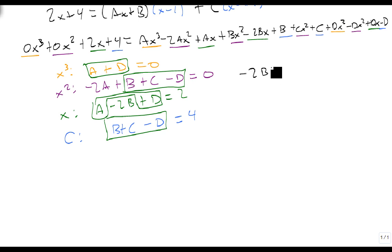So I get minus 2b, plus 0, equals 2. So minus 2b is 2, and that makes b a negative 1.